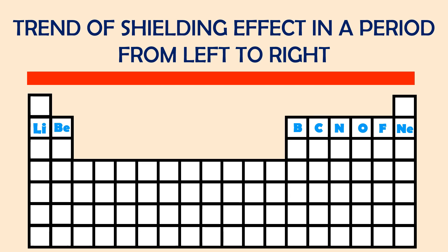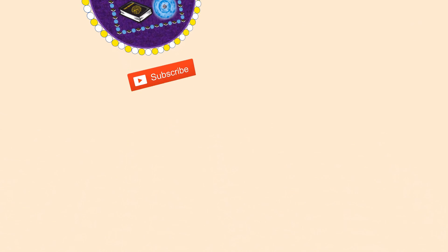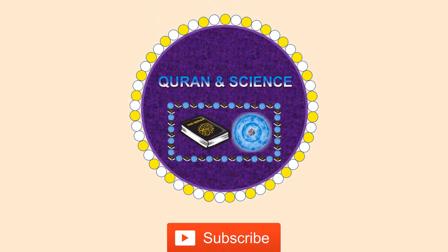Since the inner electrons are the same along the period in the periodic table, the shielding effect also remains the same along the period. The same shielding effect is shown by the red rectangle in this animation.